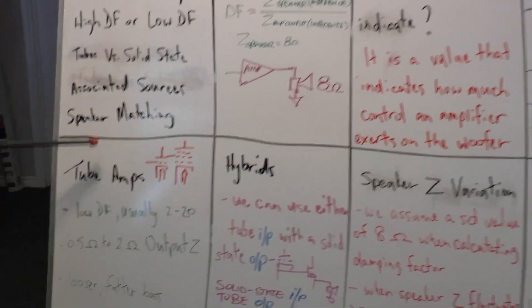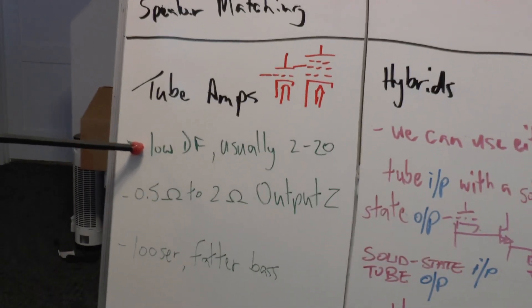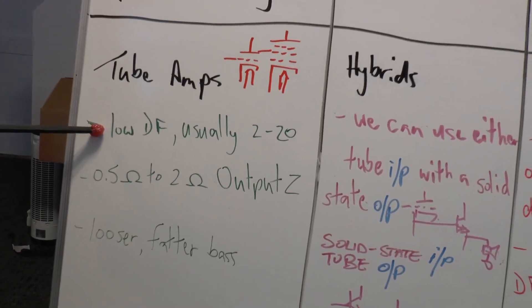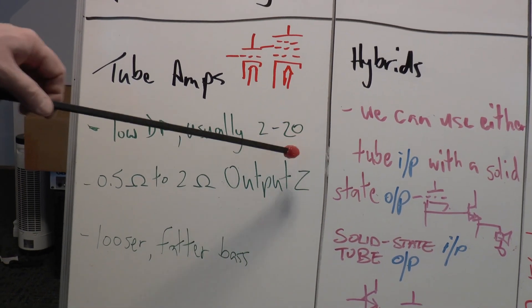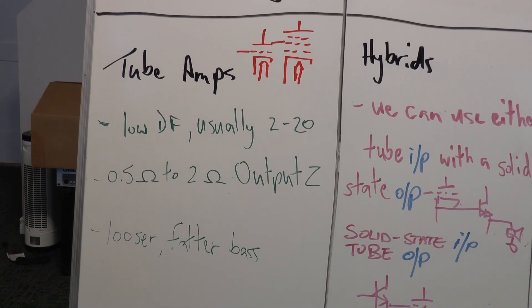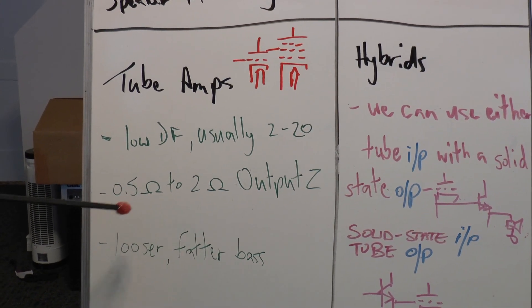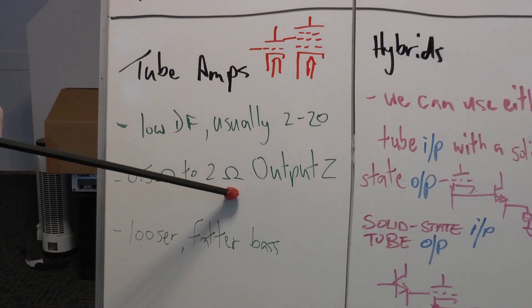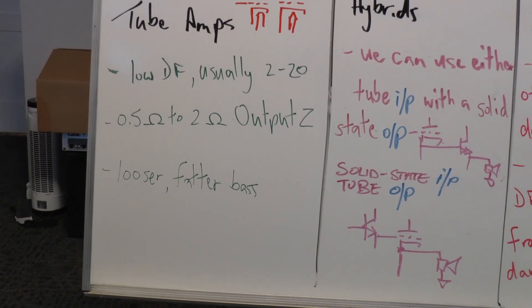Now tube amplifiers are a little bit different. All tube amplifiers have a relatively low damping factor, usually between 2 and 20. The most usual range of output impedance on a tube amplifier is 0.5 ohms to 2 ohms, and this tends to give you a looser, fatter bass.